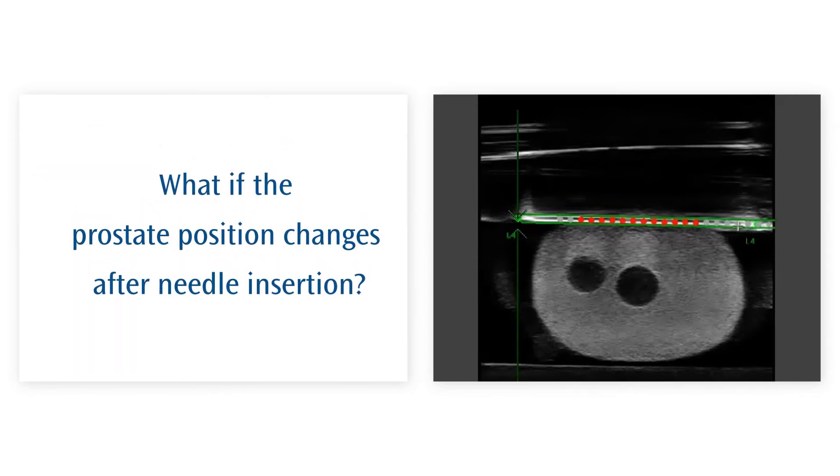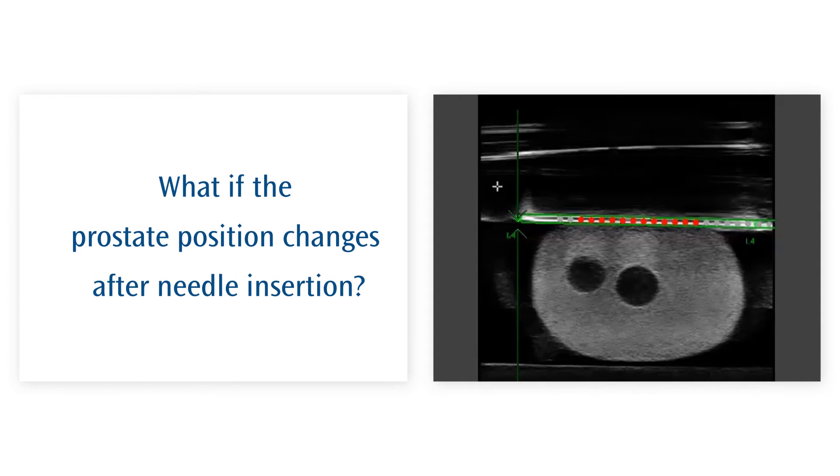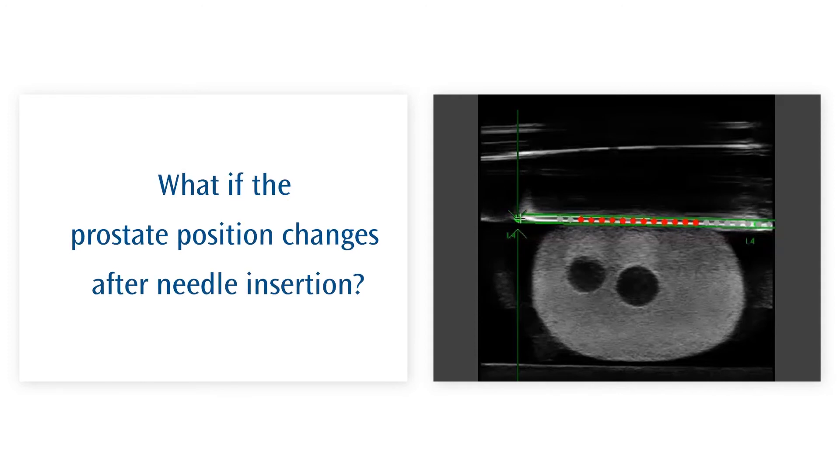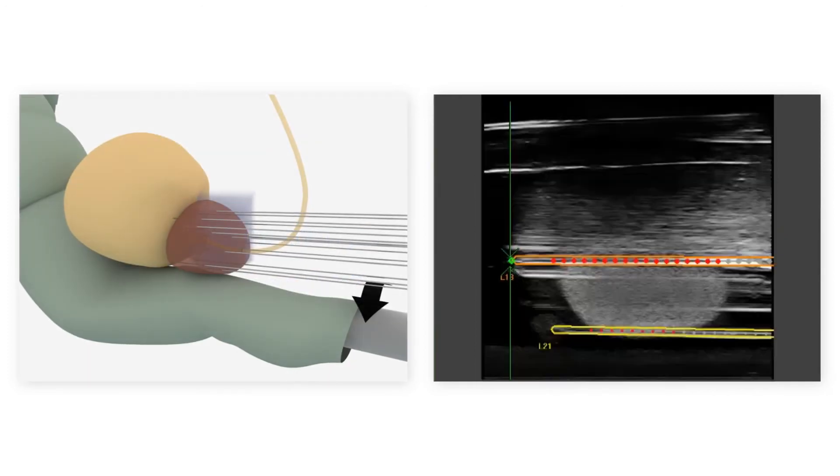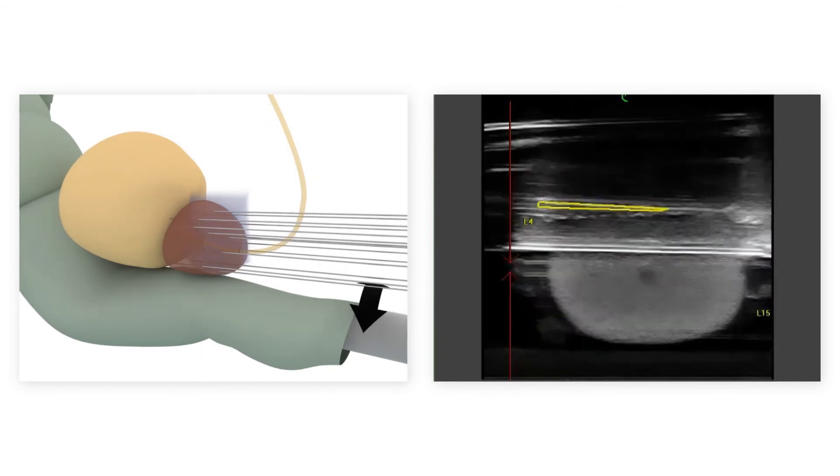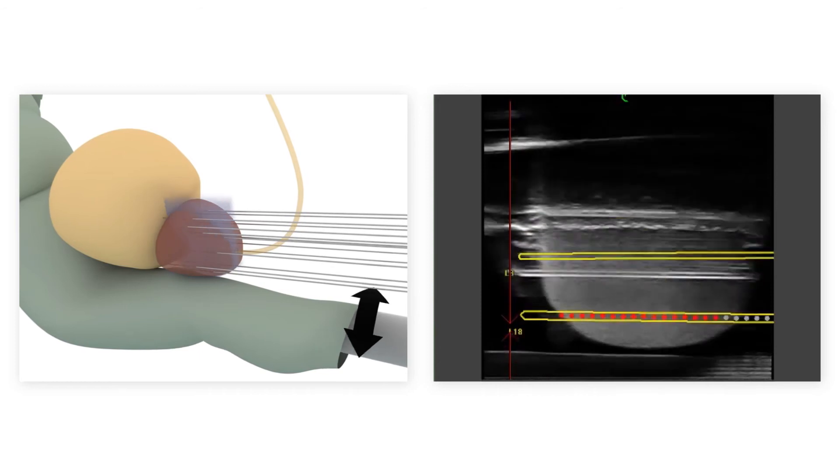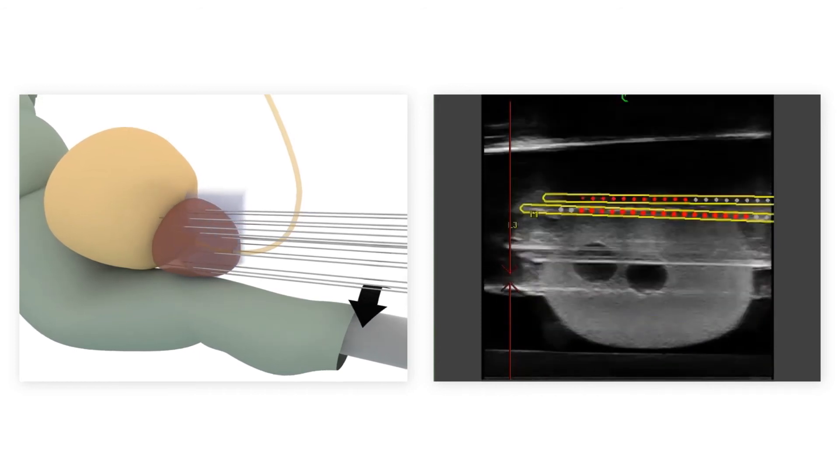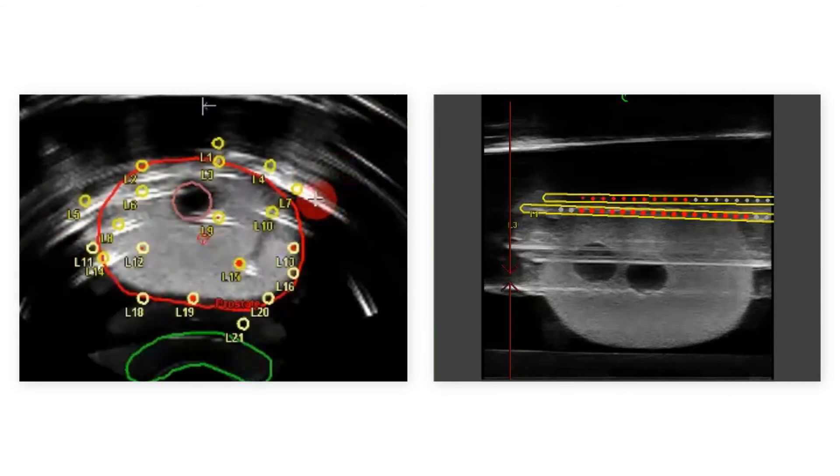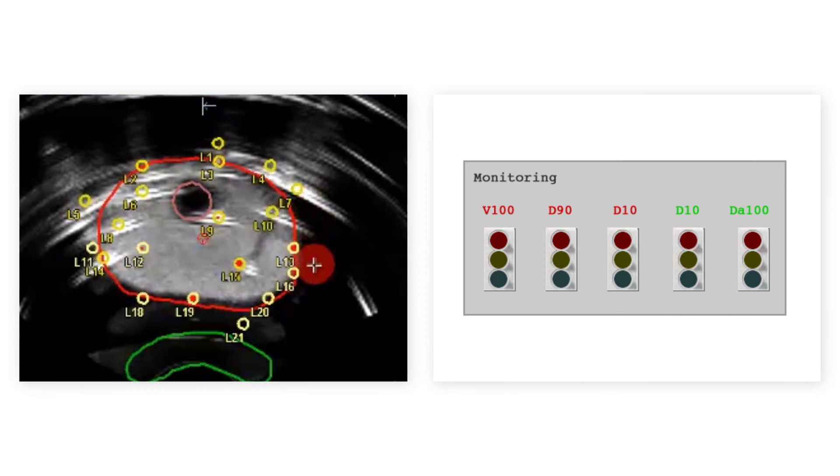Can you adjust the plan if the prostate position changes after the needles are inserted? Yes! In the event that organs have moved or the prostate is swollen, you can capture an up-to-date image set at any time. Your plan can easily be adjusted to the actual situation. In a few simple steps, you can contour the new status. The traffic lights will clearly show you the consequences for your plan.